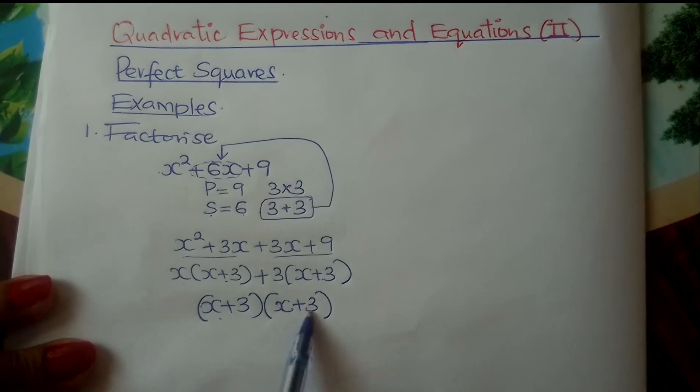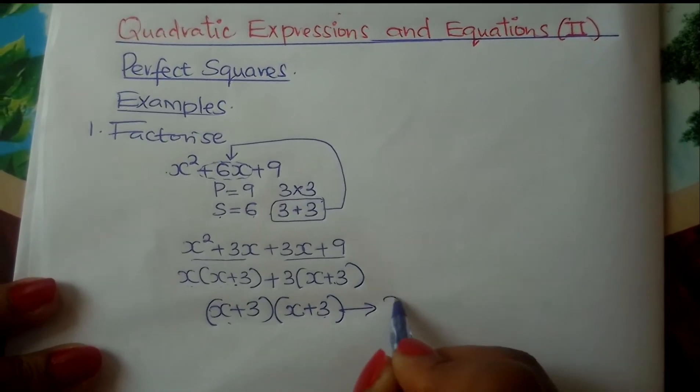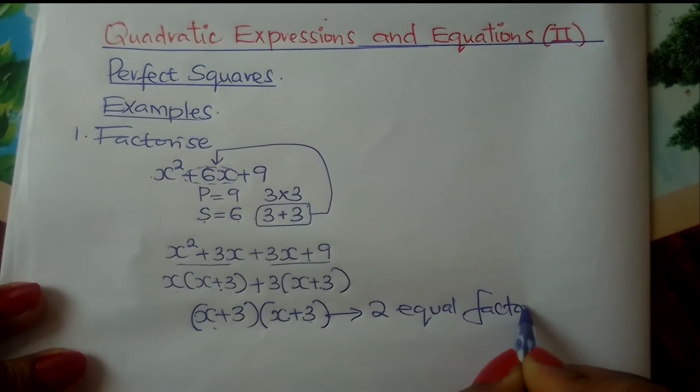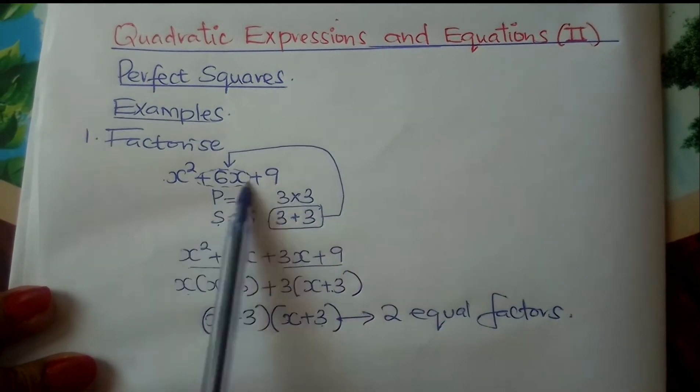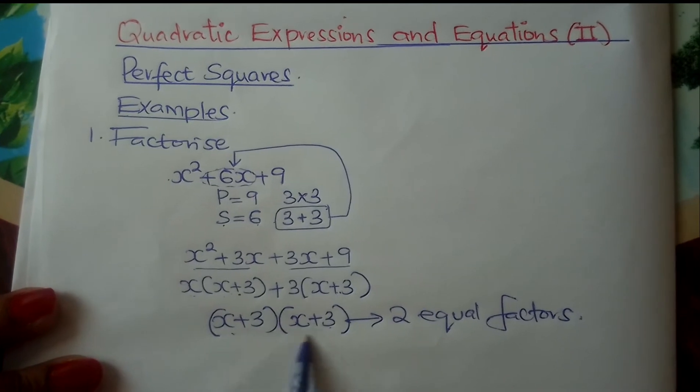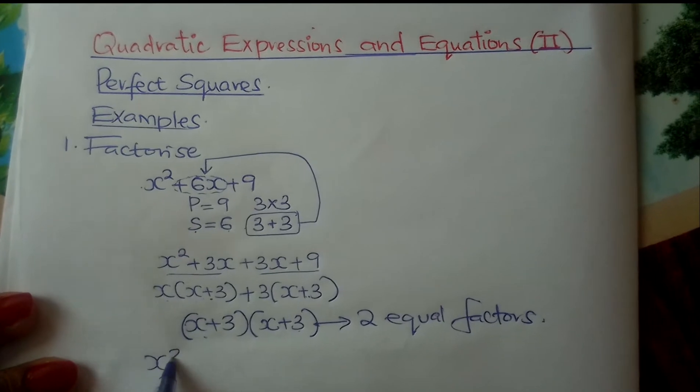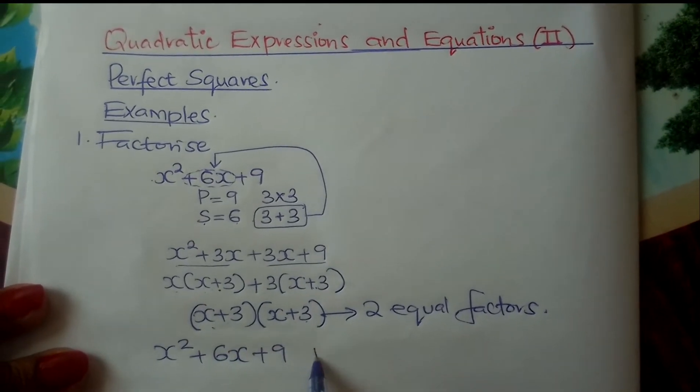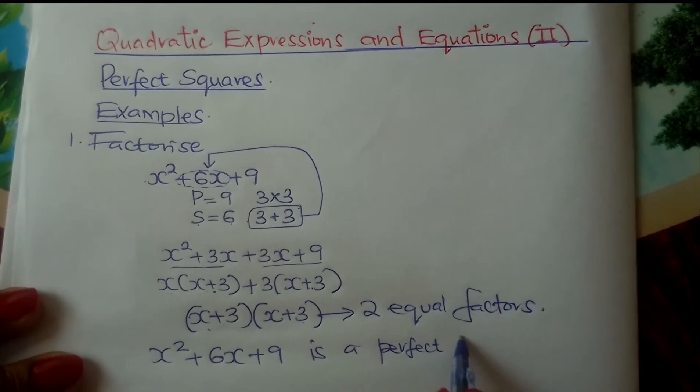If you look at these factors, these factors are equal. So we can say that these are two equal factors. A quadratic expression that factorizes into two equal factors is called a perfect square. And therefore x² + 6x + 9 is a perfect square.